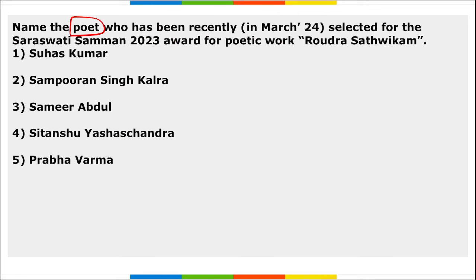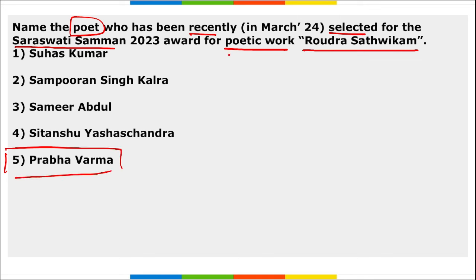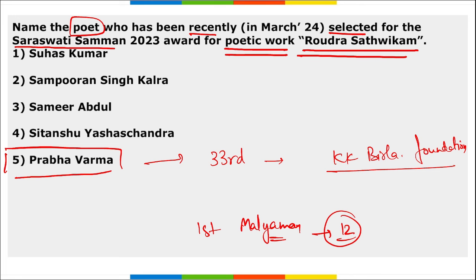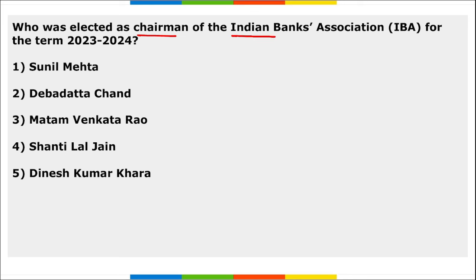Poet Prabha Varma has been selected for the Saraswati Samman award for his poetic work 'Rudra Satvikam.' He became the 33rd recipient of the Saraswati Samman, presented by the KK Birla Foundation. This is also the first Malayalam work to win the award in 12 years.